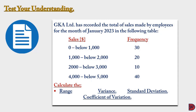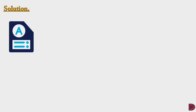Let's test our understanding again. GKA Limited has recorded the total sales made by employees for the month of January 2023. Sales below $1,000 is 30 employees; $1,000 to below $2,000 is 20; $2,000 to below $3,000 is 10; $4,000 to below $5,000 is 40. We are to calculate the range, variance, standard deviation, and coefficient of variation.